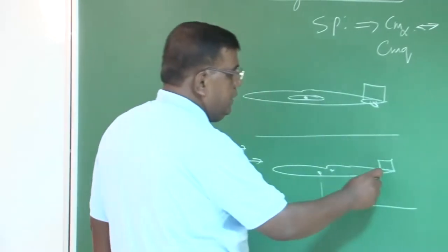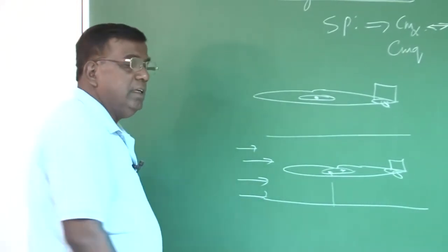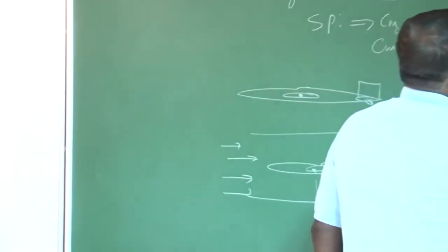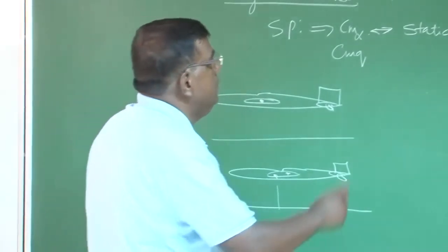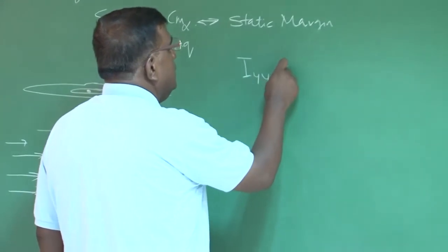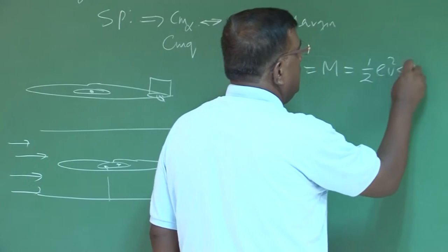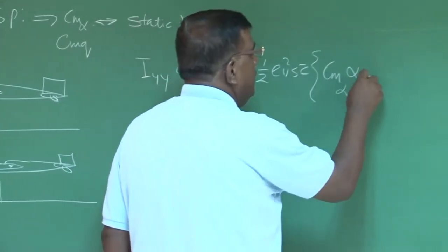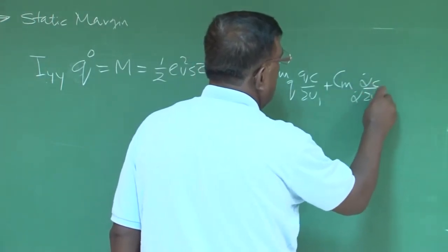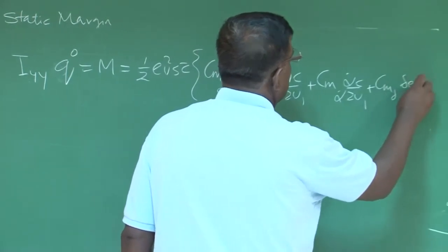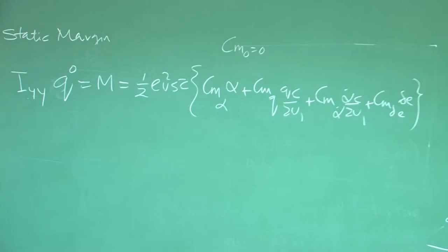This is a one-dimensional case — only pitching motion is considered. To model it: Iyy·q̇ equals the moment, which is (½ρV²·S·c̄)·[CMα·α + CMq·q·c̄/(2u1) + CMα̇·α̇·c̄/(2u1) + CM_δe·δe]. We took CM0 equal to zero to focus on dynamics. This can be written as: q̇ = Mα·α + Mq·q + Mα̇·α̇ + M_δe·δe, where Mα = (½ρV²·S·c̄·CMα)/Iyy.